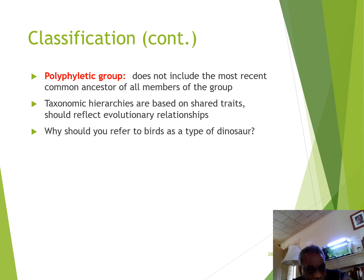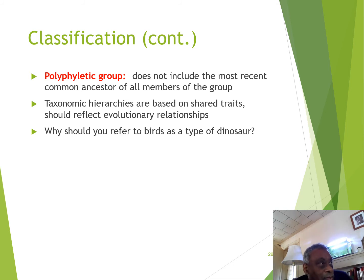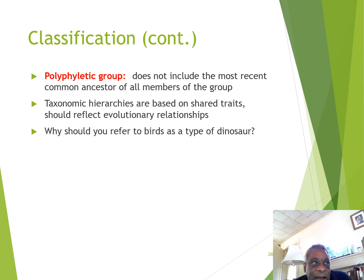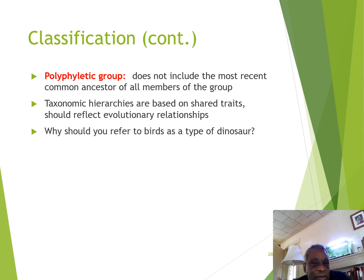There are three types of phylogenetic groupings: monophyletic, paraphyletic, and polyphyletic. A monophyletic grouping includes all the members of a group including their common ancestor. A paraphyletic grouping involves sharing only some members of the group but not all. A polyphyletic group doesn't include the most recent common ancestor of all the members.